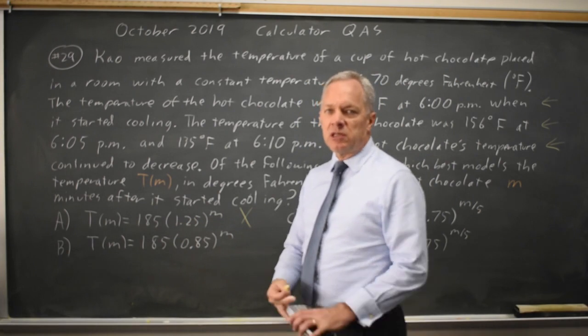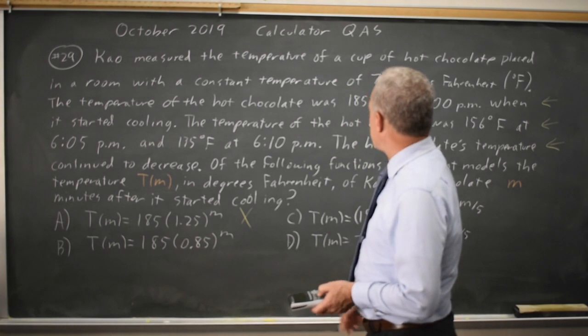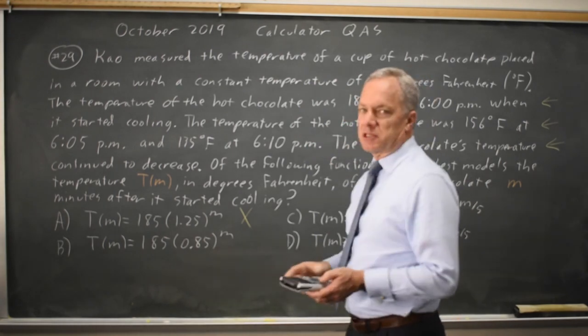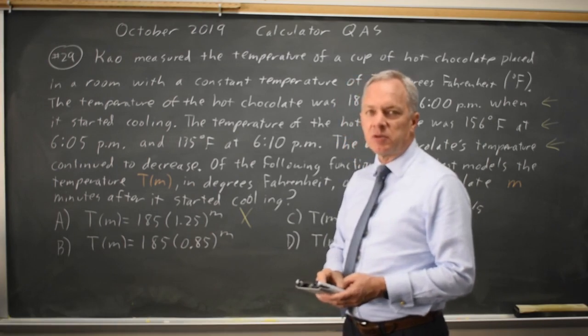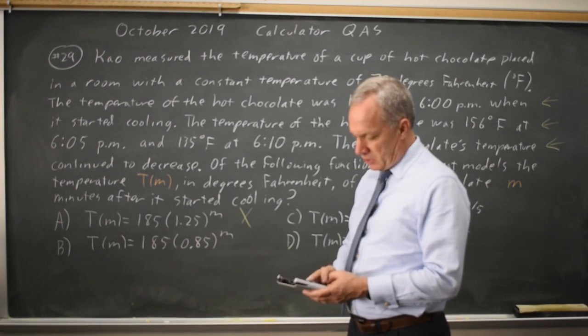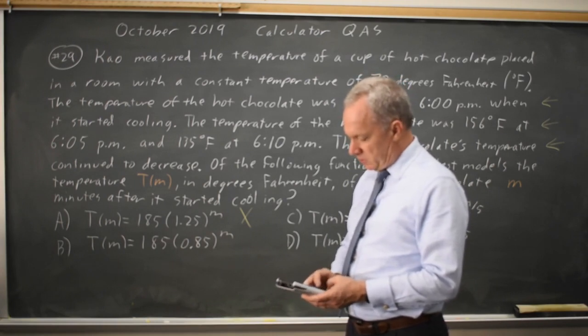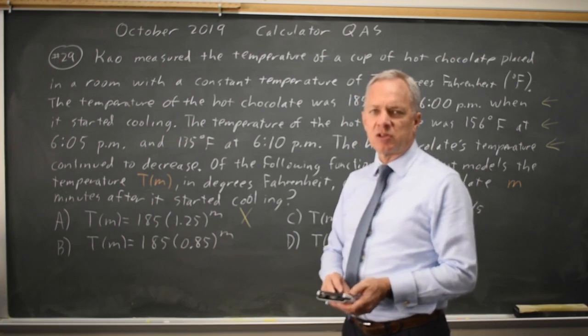Choice B, you may want to go to your calculator and put in m equals 10. Clearly at m equals 0, we get 185, which is the correct starting temperature, but at m equals 10, on either a graphing calculator you can go to y equals, or on a regular scientific calculator, 185 times 0.85 to the power 10. Again, it says at 10 minutes our hot chocolate is at 36 degrees.